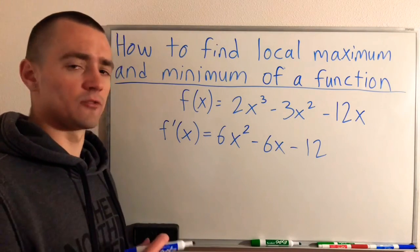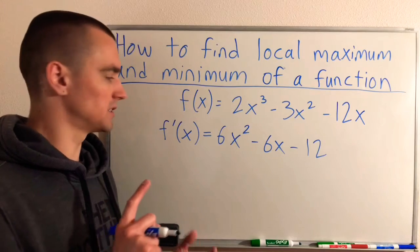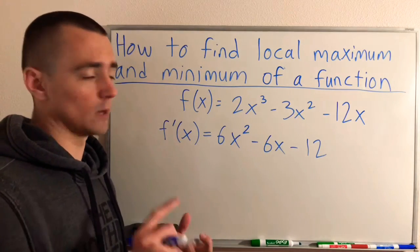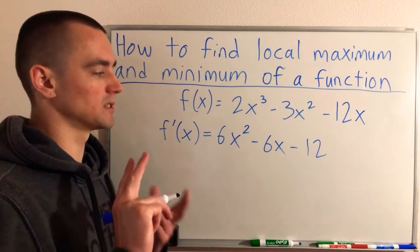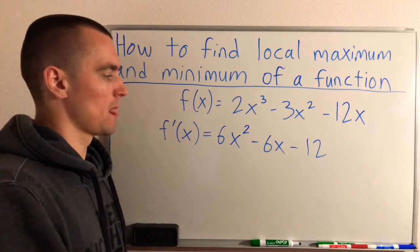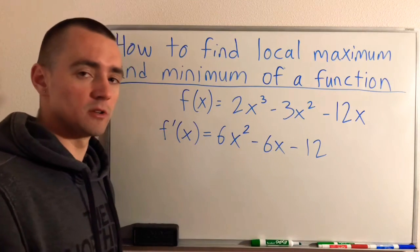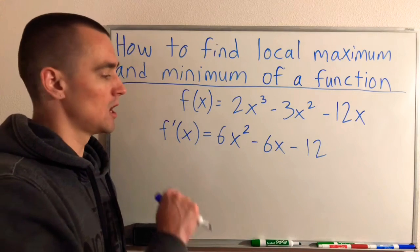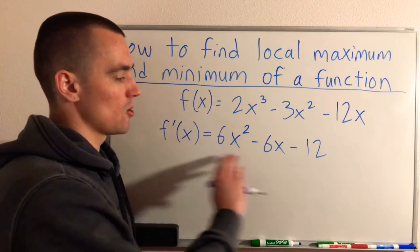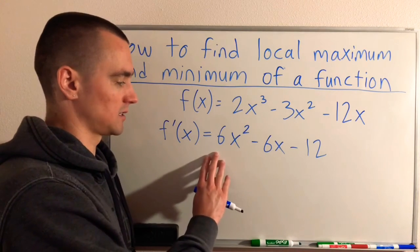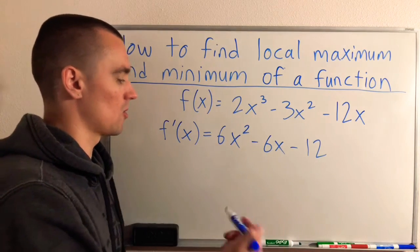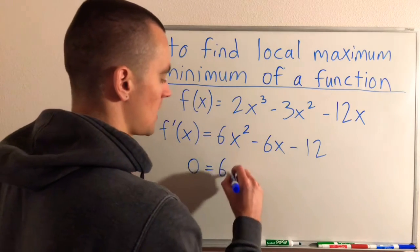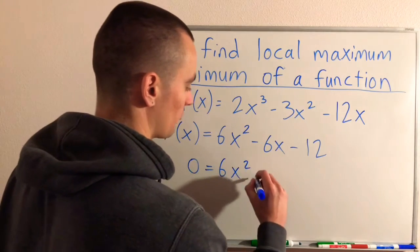Now to find the critical numbers, we need to figure out the places where f prime equals 0 and the places where f prime does not exist. This is a polynomial, and polynomials are defined everywhere, so there are no x values where this does not exist. So all we need to do to find our critical numbers is set our derivative equal to 0 and solve for x.